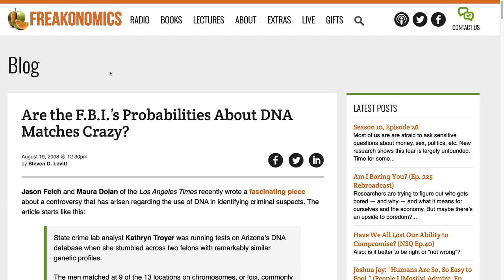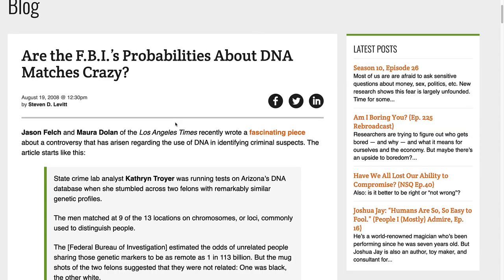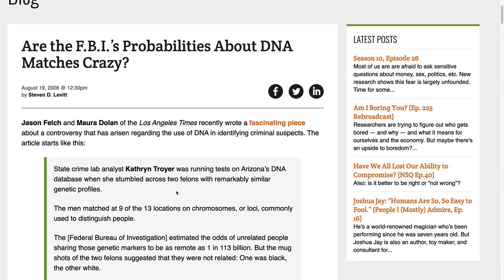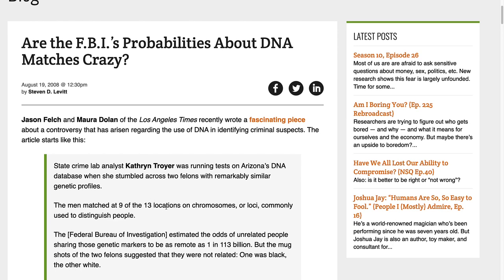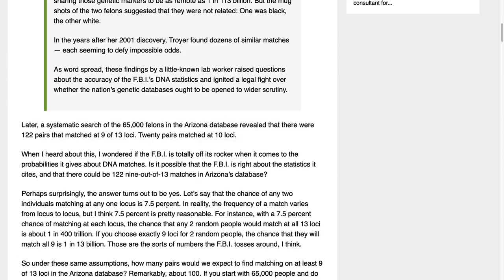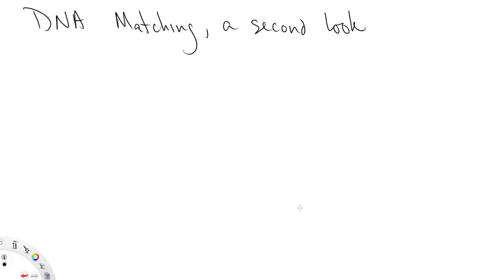So if you recall, this is the blog post on the website Freakonomics that tells us about the story of the state crime lab analyst, Catherine Troyer, who is trying to match two felons' DNA at 13 locations. The only other information we need is for this post, they assumed that any two individual positions in a DNA strand consisting of 13 total positions will match with a probability of 7.5%.